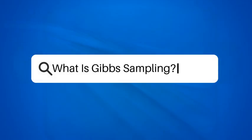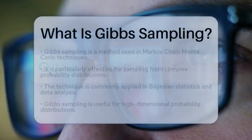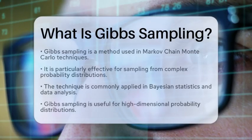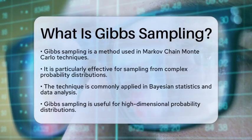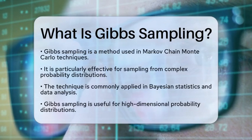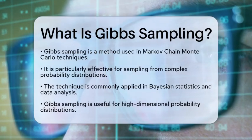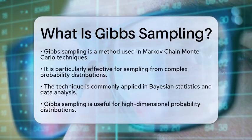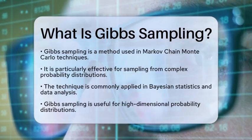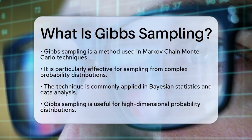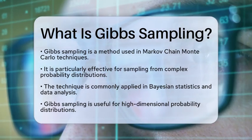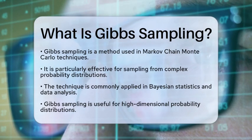What is Gibbs sampling? Have you ever wondered how we can sample from complex probability distributions without directly accessing them? This is where Gibbs sampling comes into play. It is a technique used in Markov chain Monte Carlo methods, especially within Bayesian statistics and data analysis.